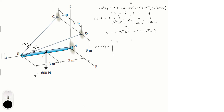For AB × Td: the matrix is the same except the j-component of Td is +0.288. The numbers are identical except the j sign changes, giving +1.728 Td in k for positive diagonals and -2.574 Td in j for negative diagonals. So AB × Td = -2.574 Td j + 1.728 Td k.